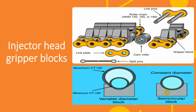We have two types of gripper blocks: the semi-circular block and the variable diameter block. The semi-circular block is made for only one size of coiltube — for example, one and a half inch. It distributes stress around the circumference of the coiltube so forces are lower. In the variable diameter block, there are only two contact points so forces are higher, but the advantage is it suits a range of coiltube sizes.